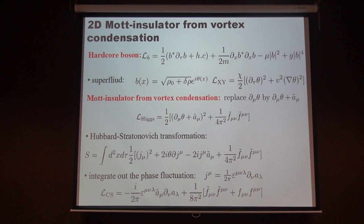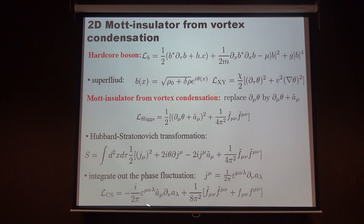So now we have two U(1) gauge fields and also two Maxwell terms. In the infrared limit the BF term dominates because it has lower scaling dimension, and we can remove the Maxwell terms. Roughly speaking, the Mott-insulating phase is described by such a topological BF theory. But this theory is actually trivial — trivial in the sense that on the boundary there is nothing interesting. I will show you why the boundary is trivial and then twist this theory to make it non-trivial on the boundary.